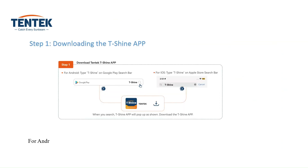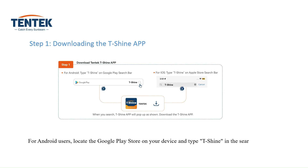Step 1: Downloading the T-Shine app. For Android users, locate the Google Play Store on your device and type T-Shine in the search bar. For iOS users, access the Apple Store and search for T-Shine.